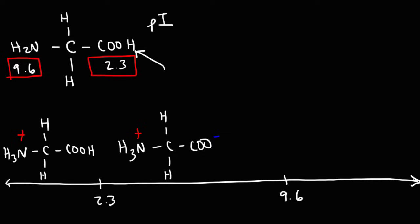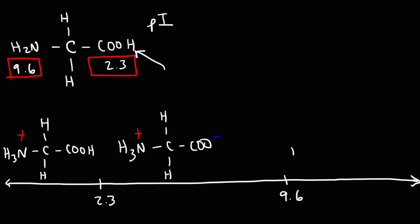When the pH goes past 9.6, the amino group will lose the hydrogen — so it's going to be deprotonated, and this will now be the dominant form of the amino acid. On the left, the net charge is +1. In the middle, it's 0. And on the right, the net charge is -1.